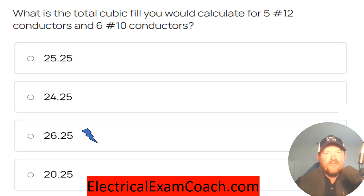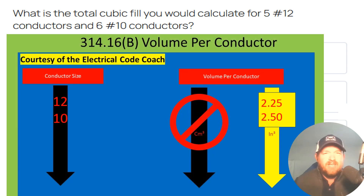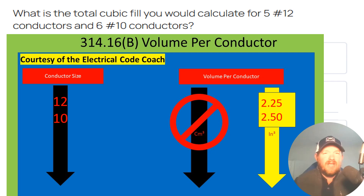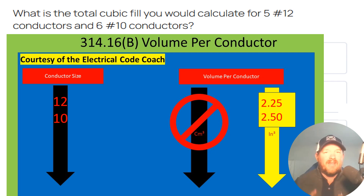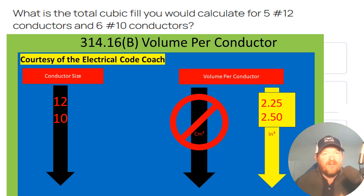For this one, we're going to head to NEC 314.16(b). We're going to start on our left-hand side and find our 12-gauge conductors, and we find that they are 2.25 cubic inches each. Then we find our 10s and find that they are 2.50 cubic inches each.